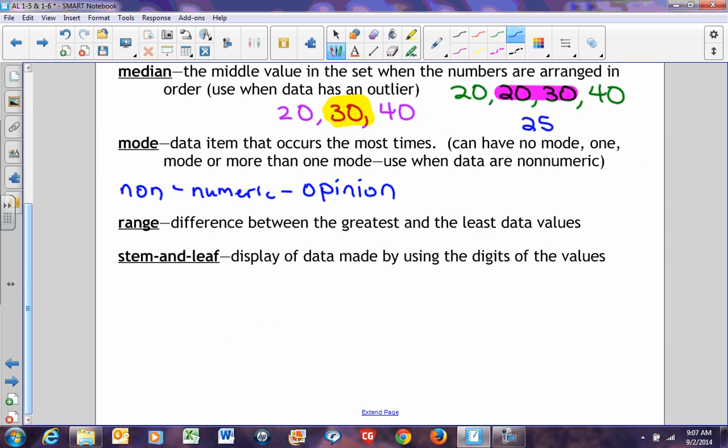The range is the difference between the greatest and the least data values. You simply subtract. A stem-and-leaf is a display of data using the digits of the values, and we'll get into that in more detail in a few minutes.